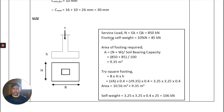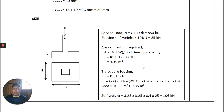The service load N = G_K + Q_K = 850 kN. The assumed footing self-weight is 10% of the service load, which is 85 kN, giving a total service load of 935 kN. The required footing area equals the total load divided by the soil bearing capacity. We then take the square root of the required area and propose a trial size of 3.25 m × 3.25 m with a footing depth of 400 mm.